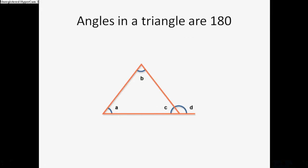Angles in a triangle add to 180. So a plus b plus c equals 180. And a plus b equals d plus c equals 180 because of angles on a straight line.